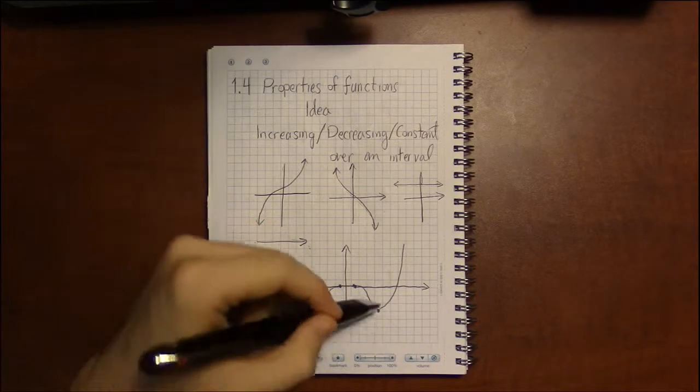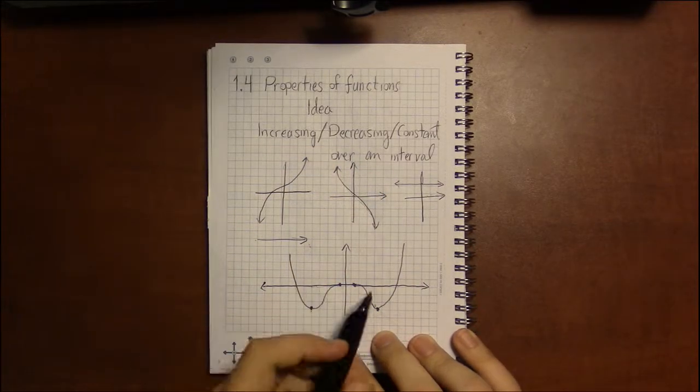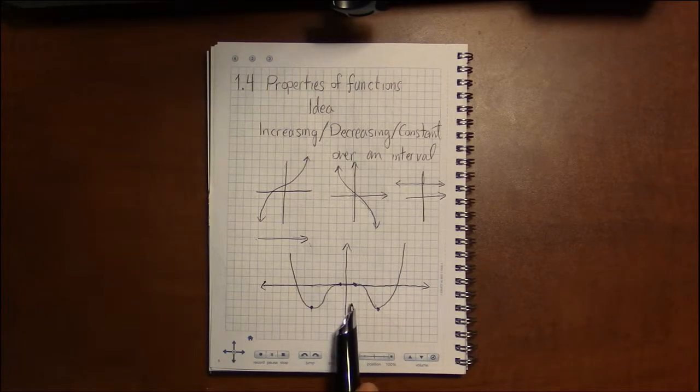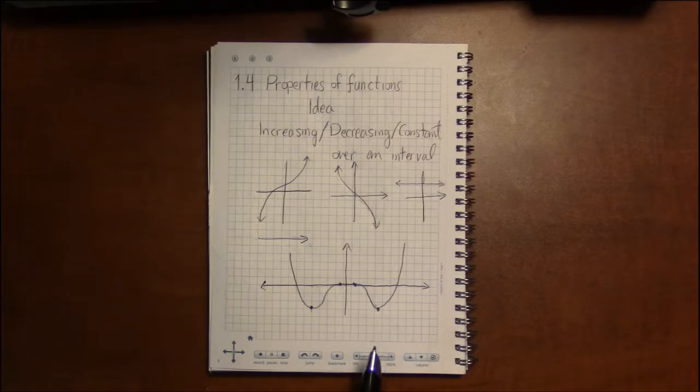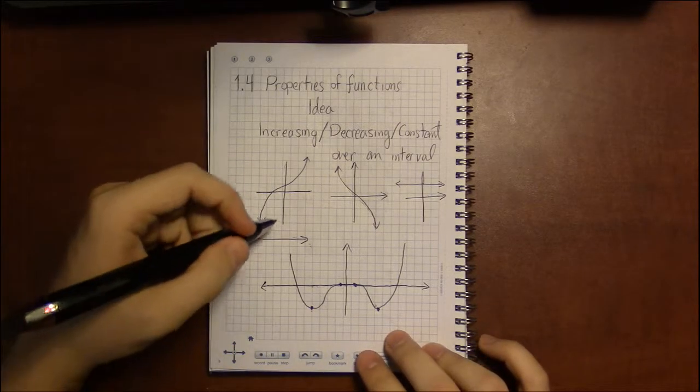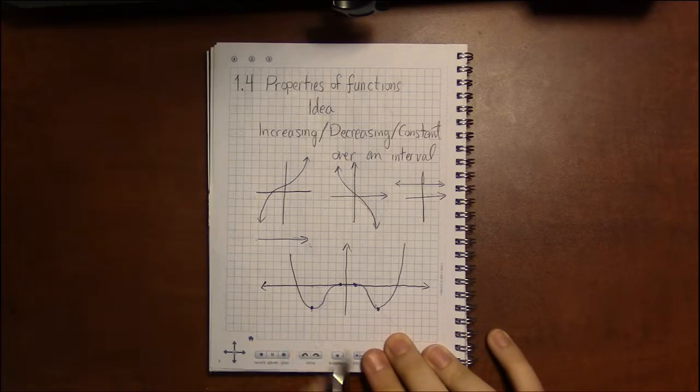Here it's on two regions, here it's increasing on two regions, this is decreasing, and on one region this graph happens to be constant. And this brings up another idea that the section and book talks about, that is of relative maxes and relative mins.